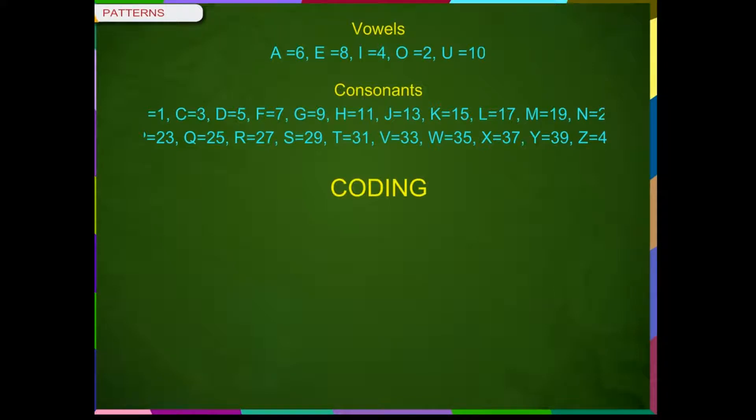Coding: So, to code the word CAT, we find the numbers for each letter. Look up C and you will find that C is equal to 3. Look up A and you will find that A is equal to 6. Finally, look up T and you will find T is equal to 31. So, CAT is equal to 3631.